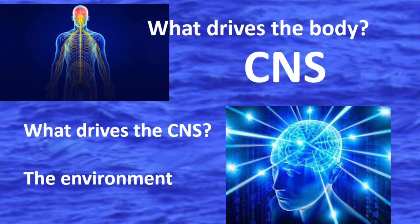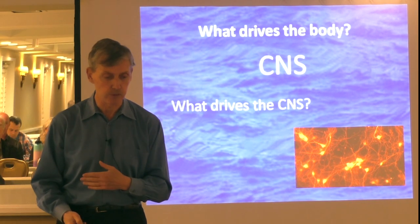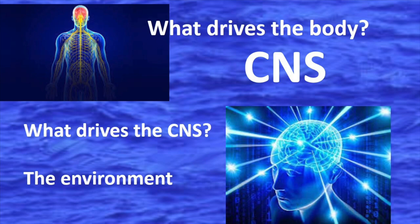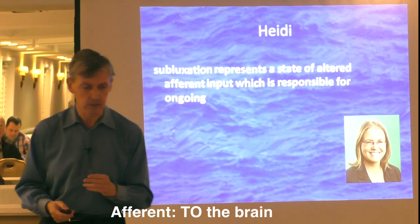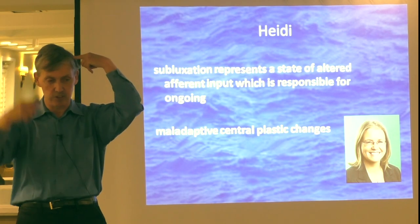What drives the body? The central nervous system drives the body. Well then, what drives the central nervous system? The environment. Our afferent neurology gets information every second of your life from the environment at every level. Heidi says subluxation represents a state of altered afferent input which is responsible for ongoing maladaptive central plastic changes.